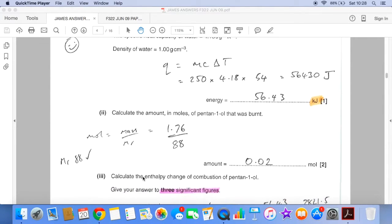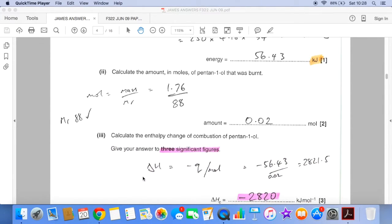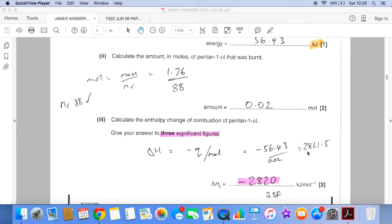And then the enthalpy change to three significant figures. Delta H is minus, in this case because it's exothermic, Q over the moles. So we put our kilojoules, divide by the moles, and there's your calculator value to three significant figures minus 2820.